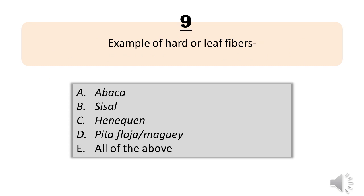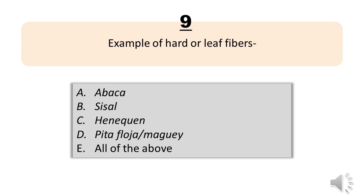Number 9. Example of hard ore leaf fibers. A. Abaka. B. Sisal. C. Henequen. D. Pitofloha, Mugay. E. All of the above. The correct answer is Letter E. All of the above.